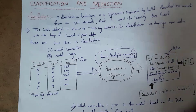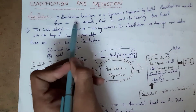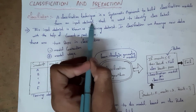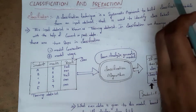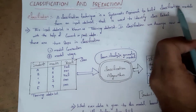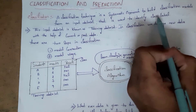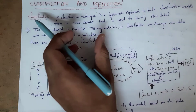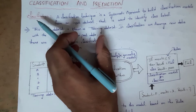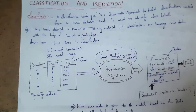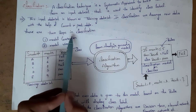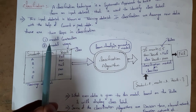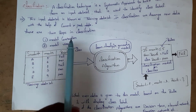How do we create these classification models? By using an input data set, we create classification models, and this classification model is used to identify class labels. There are two steps in classification: the first step is model construction and the second step is model usage.